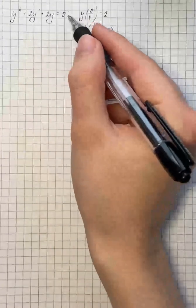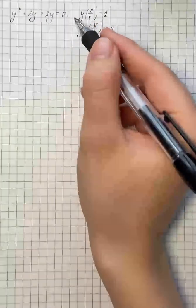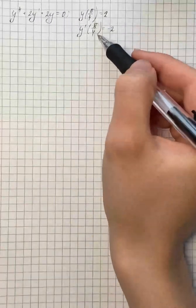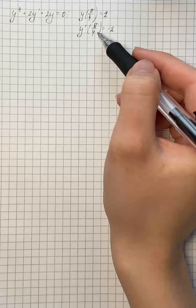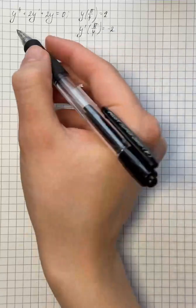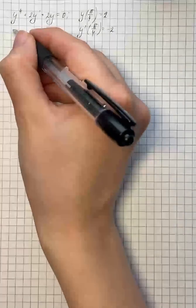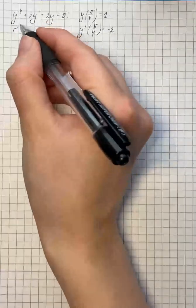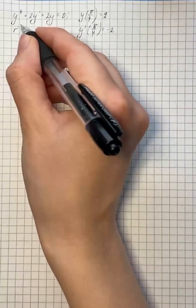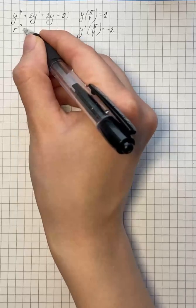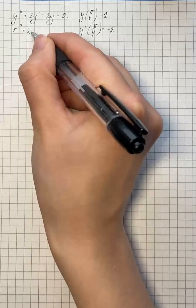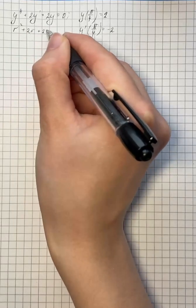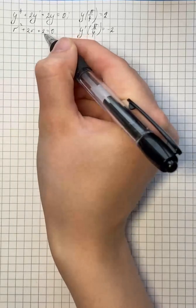We are here on a second-order homogeneous ordinary differential equation with two initial conditions. We're going to start by writing the characteristic equation, which is r squared plus 2r plus 2 equals 0.